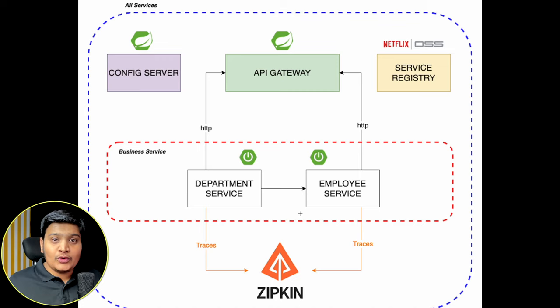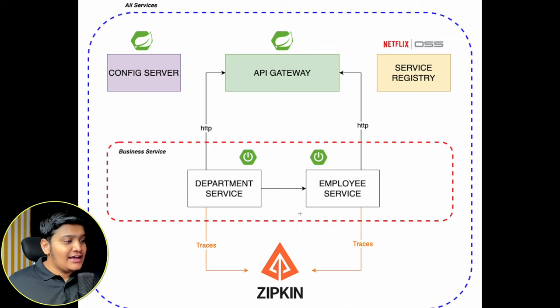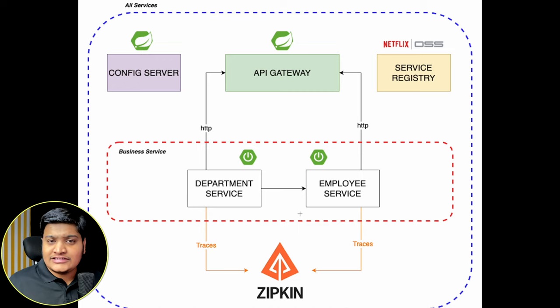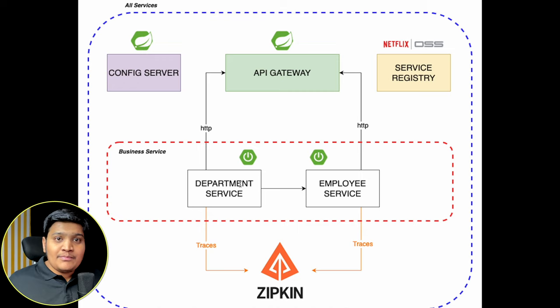The microservices word suggests itself — we are going to create different small services that will each have their own purpose. Here you can see there is a Department Service and an Employee Service. Department Service will work solely for the department — if I want to create, get, or update department details, I'll use the Department Service. If I want to work with employees — adding, getting, or updating employees — I use the Employee Service.